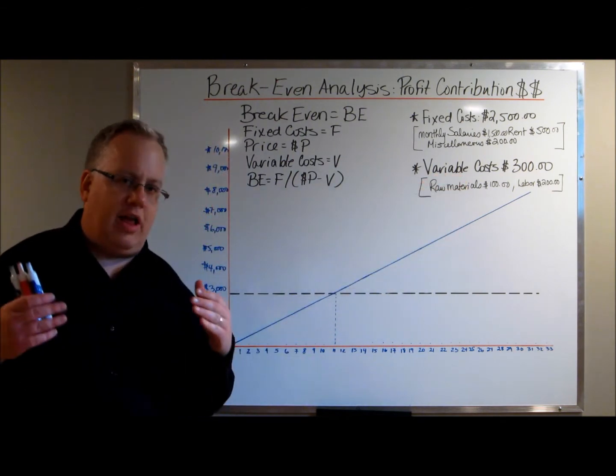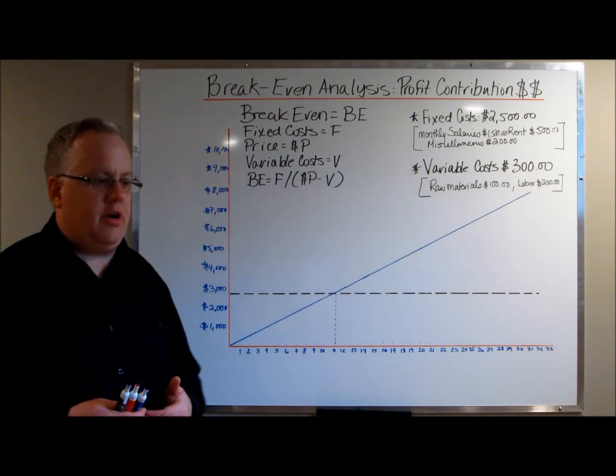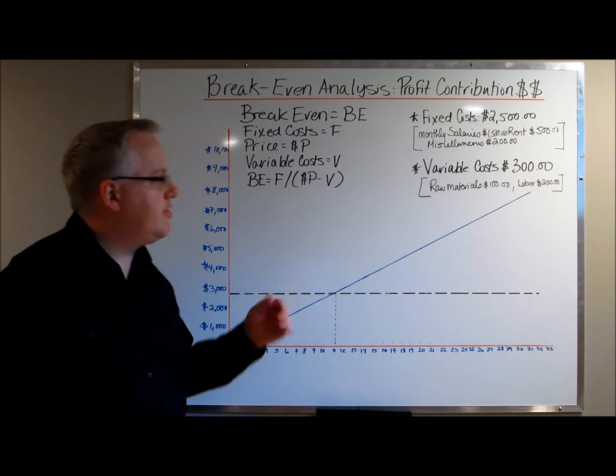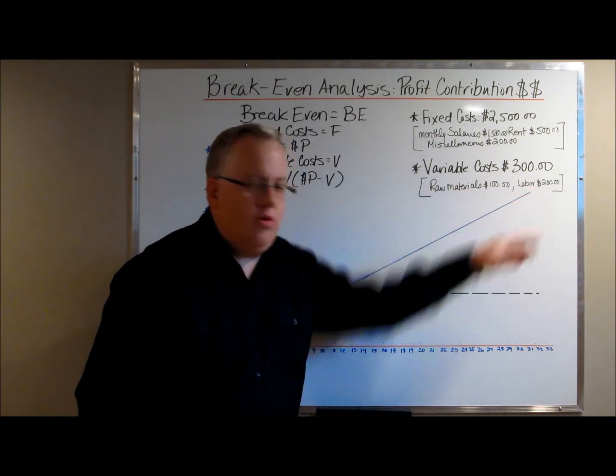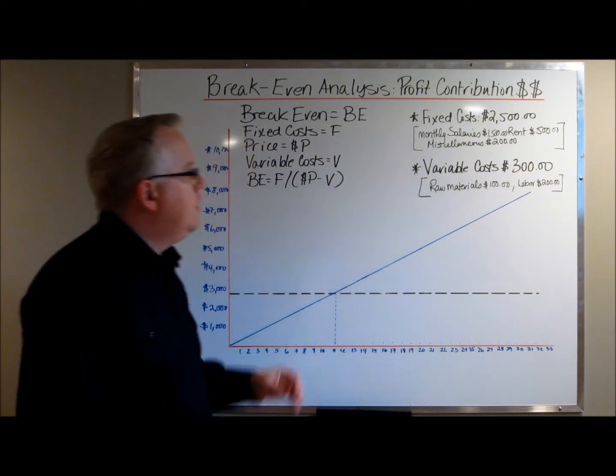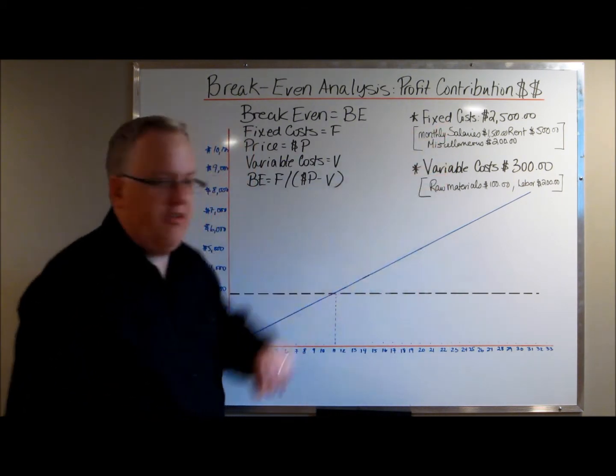Variable costs, these are like direct expenses. These are costs that are attributed to a product or service. In this case, we're talking about our product. So, we're talking about raw materials, $100, labor, $200. Again, I've kept it simple. So, we know what our fixed costs are. We know what our variable costs are.